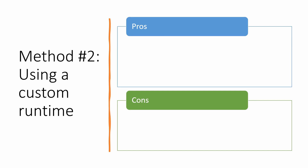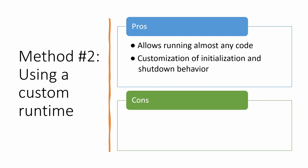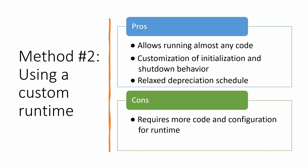The advantages of the custom runtime method: it allows running almost any code as a Lambda function as long as it can run on Amazon Linux, with no restrictions on versions of programming languages or runtime environments. It allows implementing custom initialization and shutdown behavior. The deprecation schedule of custom runtimes depends only on the Amazon Linux deprecation schedule, which is typically supported much longer than runtimes for specific versions of programming languages. The disadvantages: it requires additional code and configuration to implement communication with the Lambda Runtime API, and the increased size of the deployment package leads to slightly longer deployment and cold start times.